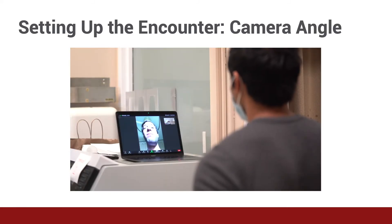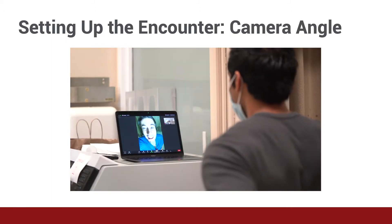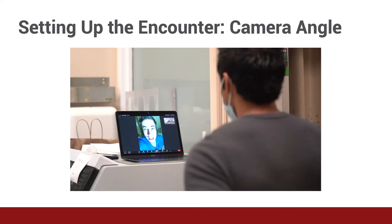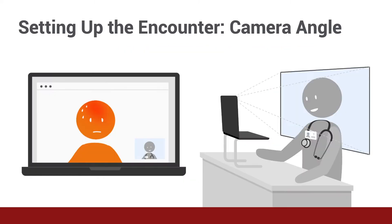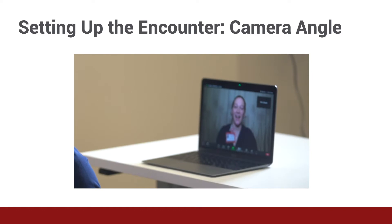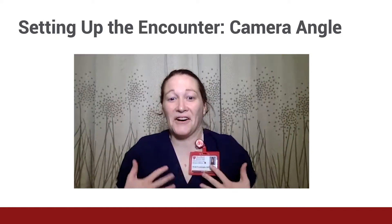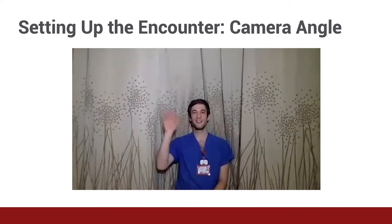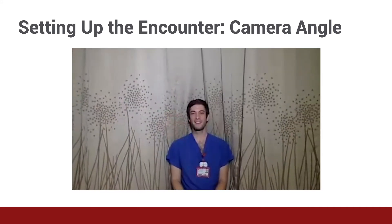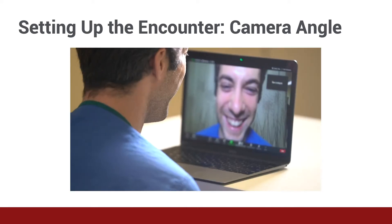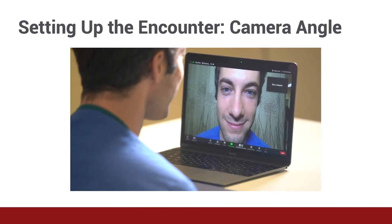Another key aspect that affects the quality of your visual presentation is where you put the camera in relation to your face. Try to place the camera at eye level so that you appear to be looking straight into it when you are talking to your patient. This serves to improve a sense of connection to whoever you are talking to. You should keep your entire head and upper shoulders in the frame. If you are too far, you will appear distant. If you are too close, it can be very off-putting.